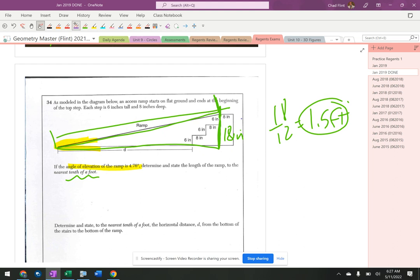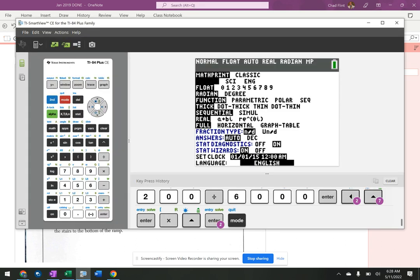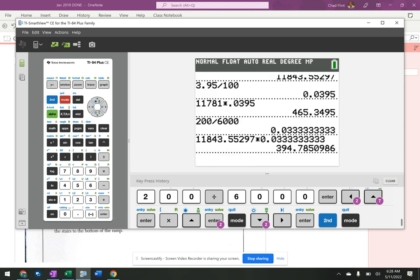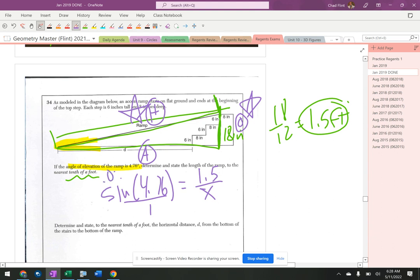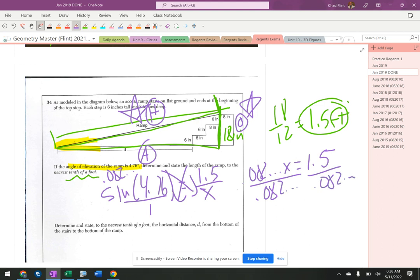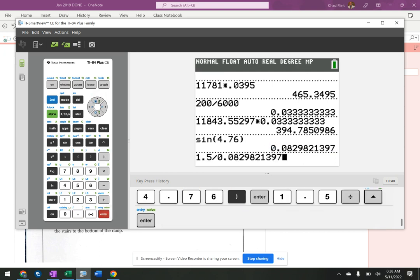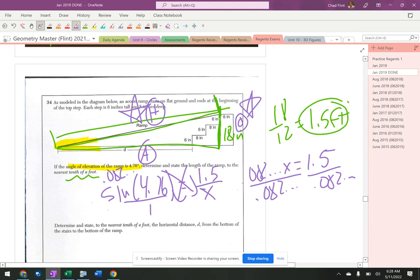So now this is the opposite side, this is the hypotenuse, this is the adjacent. And it says how long is the ramp, so that is hypotenuse and opposite, so it's gonna be sine of 4.76 equals opposite is 1.5, not 18, over X which is the hypotenuse. Make sure my calculator's in degree mode, which it's not. So sine 4.76 is 0.082. Cross multiply, I'm going to get 0.082X equals 1.5. I'm gonna divide by 0.082. 1.5 divided by that number which means it's 18. It says to the nearest tenth of a foot, so it's 18.1 feet.